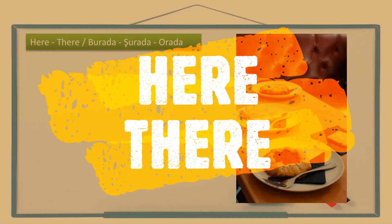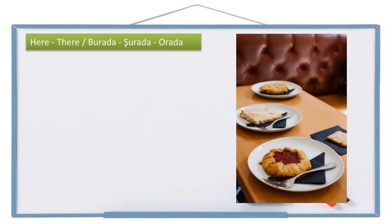Hello friends, merhaba arkadaşlar. In this lesson we are going to learn here and there, which are burada, şurada, orada in Turkish. As you see on the English side there are two words and on the Turkish side there are three words. Let's see how.